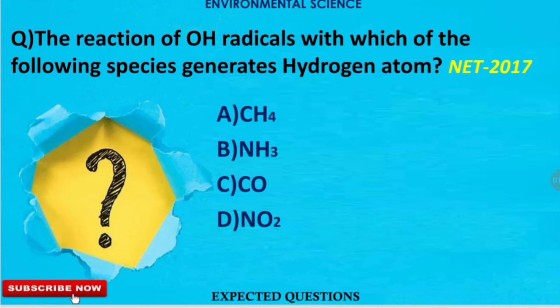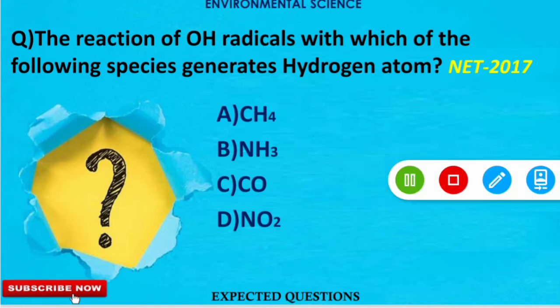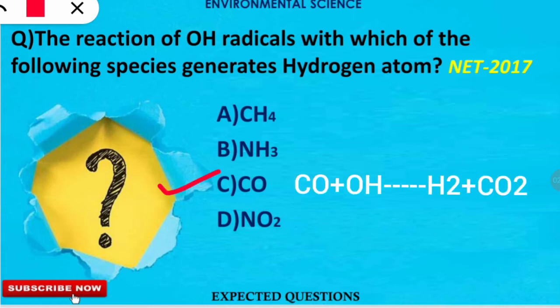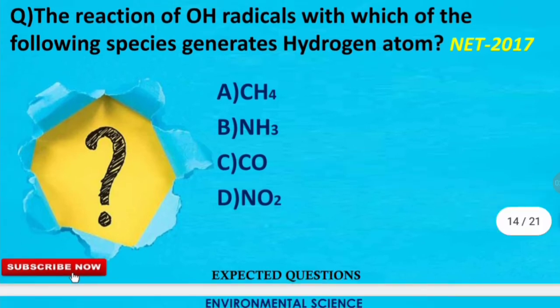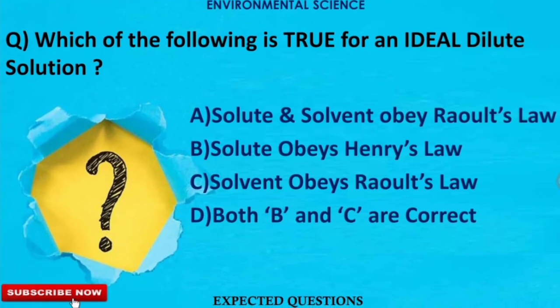The next question is: the reaction of hydroxyl radicals with which of the following species generates the hydrogen atom? The correct option is option C. When carbon monoxide (CO) reacts with the OH radical (hydroxyl radical), it gives rise to a hydrogen atom and CO₂.